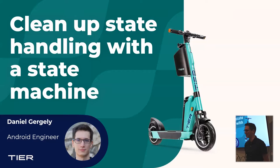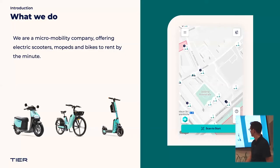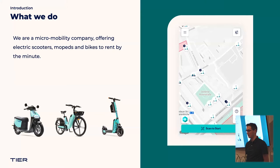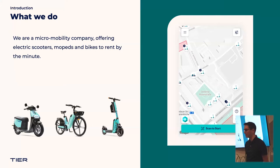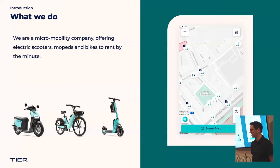Hello everybody, I'm Daniel Gergely. I'm an Android engineer at TIER, and we have an app that offers small electric vehicles to rent by the minute, such as electric scooters, mopeds and bicycles. We had some challenges regarding state handling, and more specifically they were gathering around the so-called ride state. To give you some context about what ride state is, I'd like to invite you to time travel to the beginnings of our application.